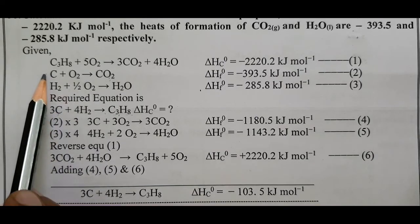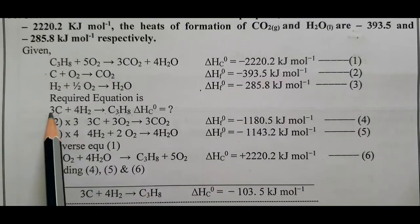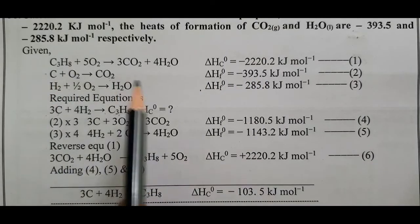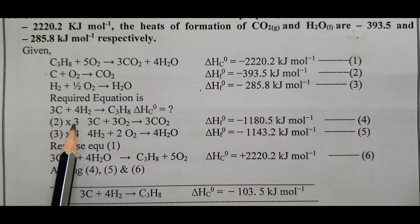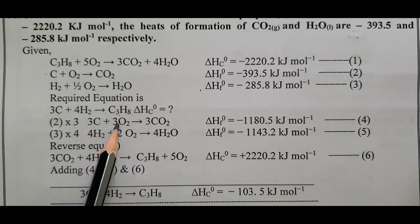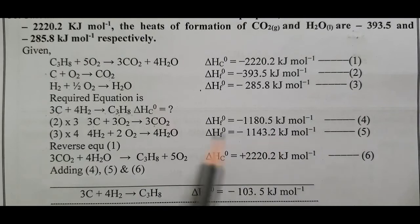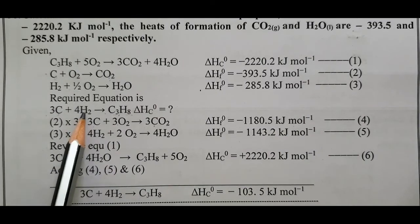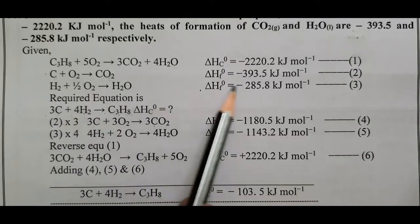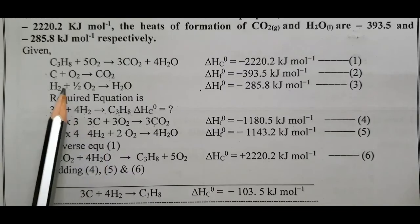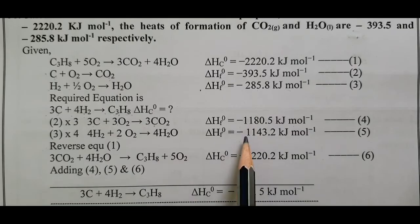There are 3 carbons on the left-hand side of the target equation, so we multiply equation 2 by 3: 3C plus 3O2 gives 3CO2. There are 4 H2 molecules, so we multiply equation 3 by 4: 4H2 plus 4 into half O2 equals 4H2O. Propane C3H8 is on the right side, so we reverse equation 1.